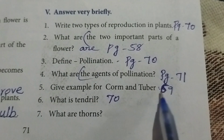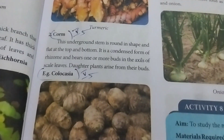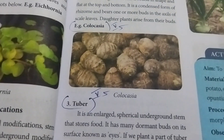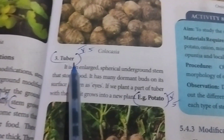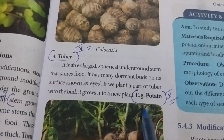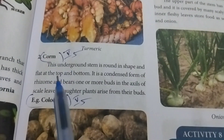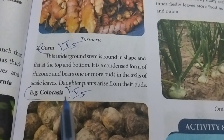Referring to page number 69: Tuber — the example is potato. Corm — the example is Colocasia.